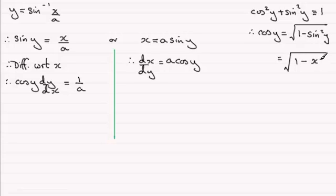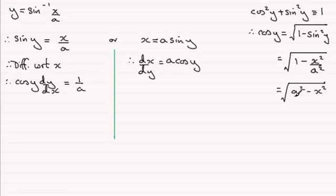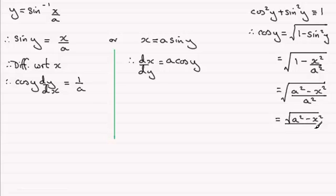That is x squared divided by a squared. Putting this over one common denominator gives the square root of a squared minus x squared, all over a squared. Taking the square root of the denominator separately, we get the square root of a squared minus x squared over a, since the square root of a squared is just a. This is an important result we're going to use now.